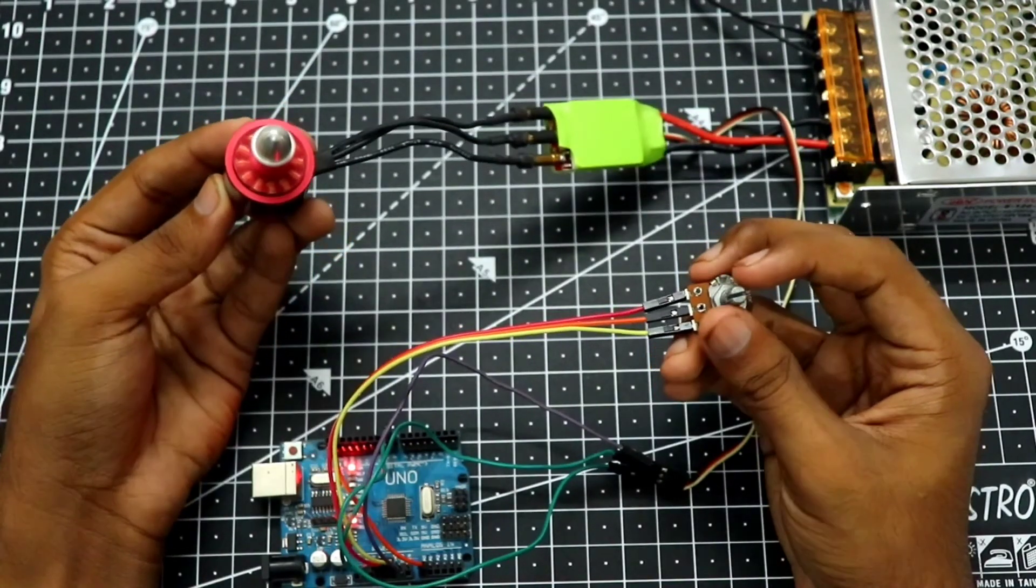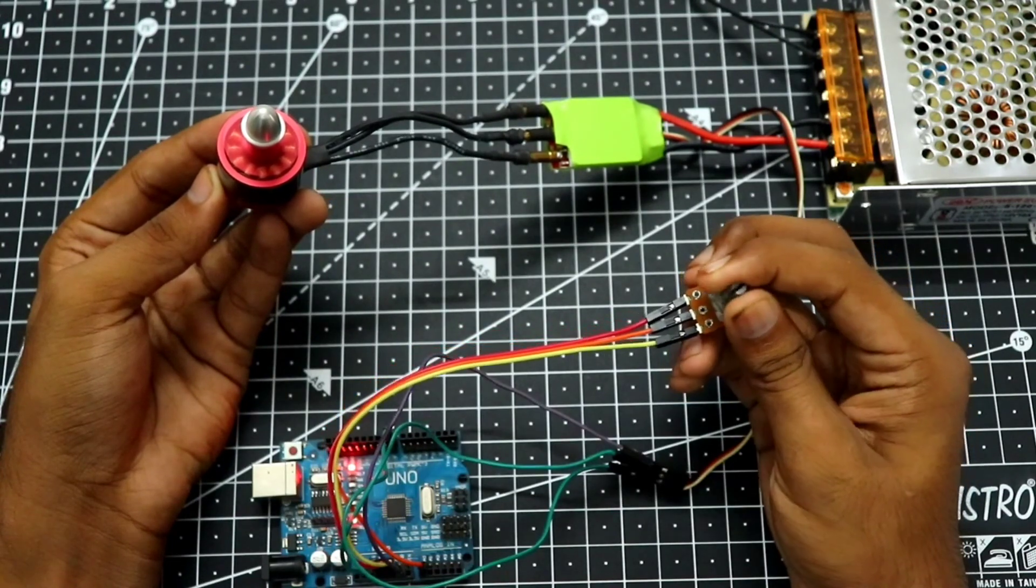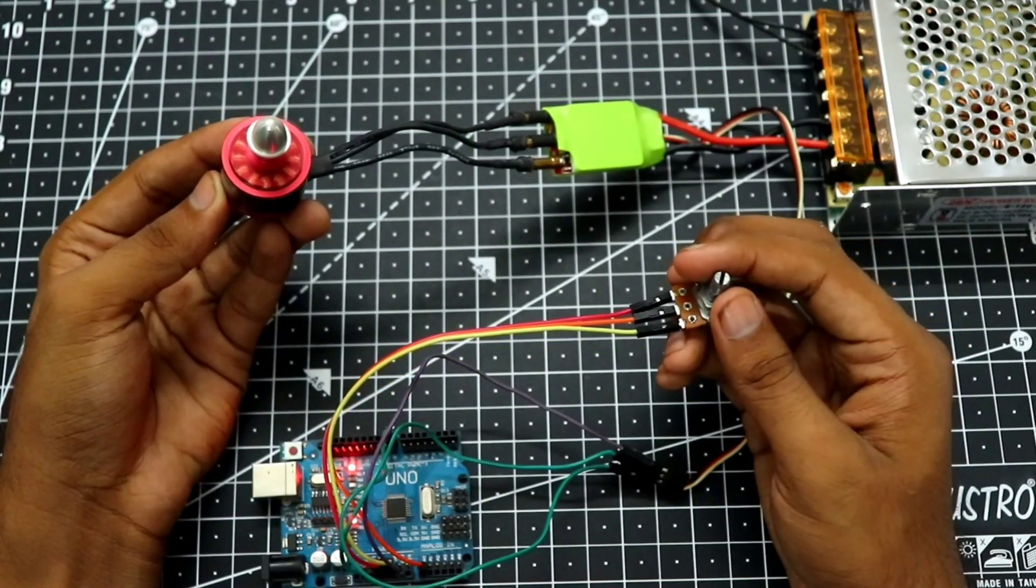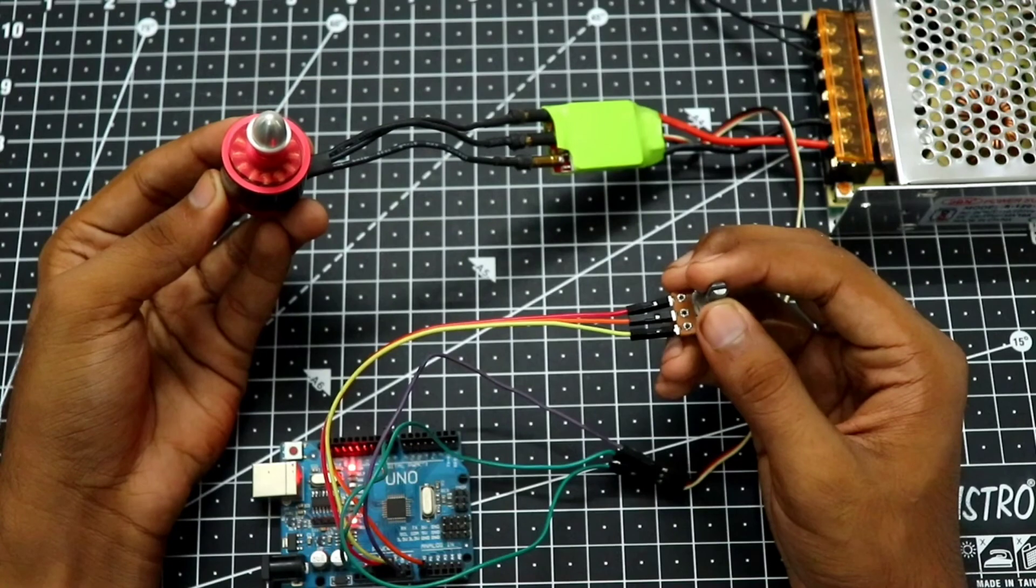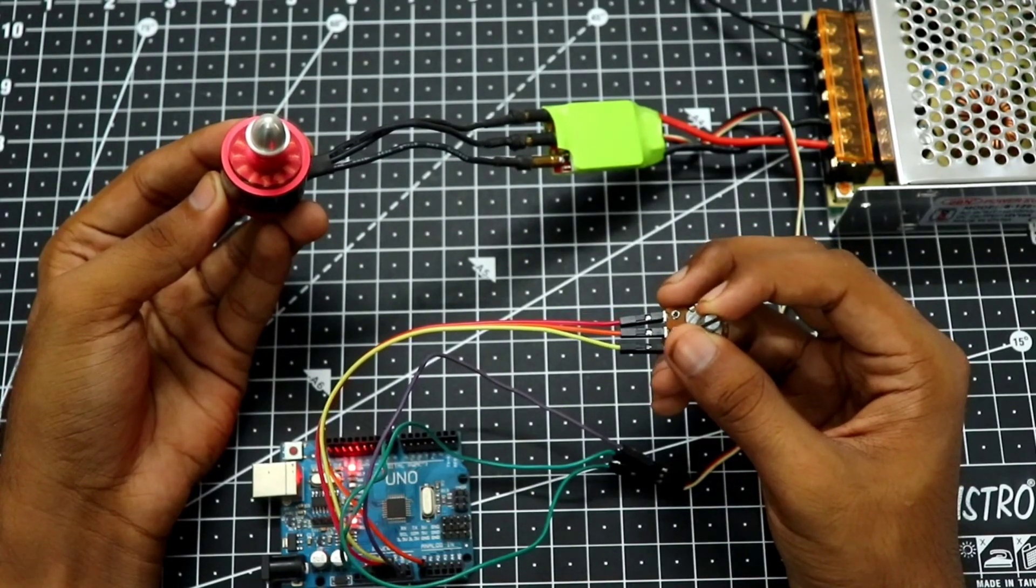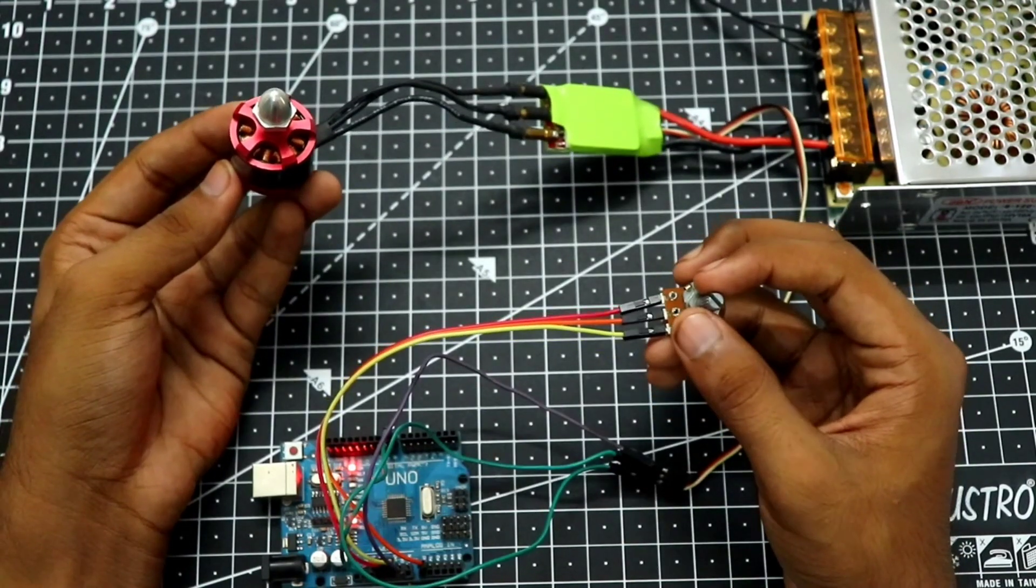As you can see, the motor is now spinning. And if you want to spin it more, then you can turn it up. As you can see, clearly the motor is spinning fast. And if you turn it down, the motor will stop. And that's about it for this video.